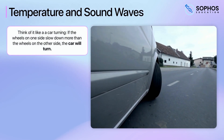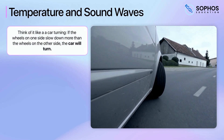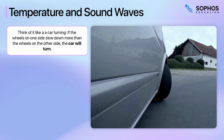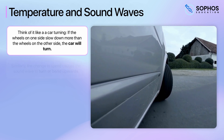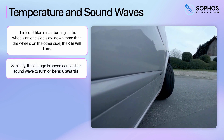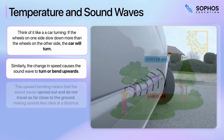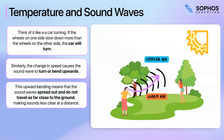Think of it like a car turning. If the wheels on one side slow down more than the wheels on the other side, the car will turn. Similarly, the change in speed causes the sound wave to turn or bend upwards. This upward bending means that the sound waves spread out and do not travel as far close to the ground, making sounds less clear at a distance. This is why sounds seem muffled and don't travel as far during the day.